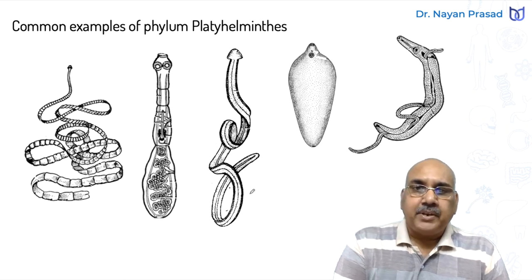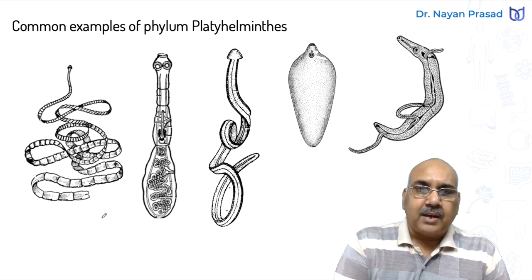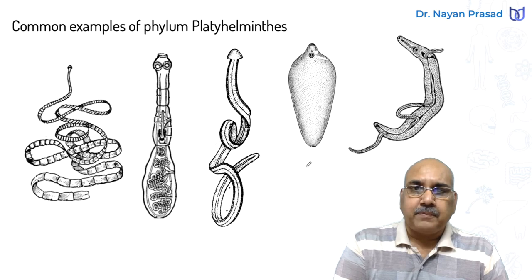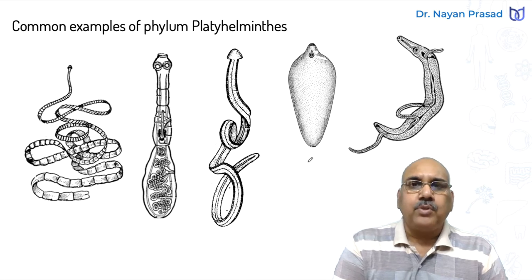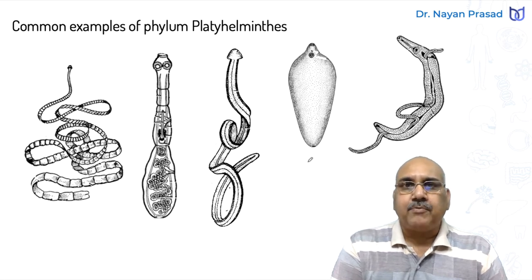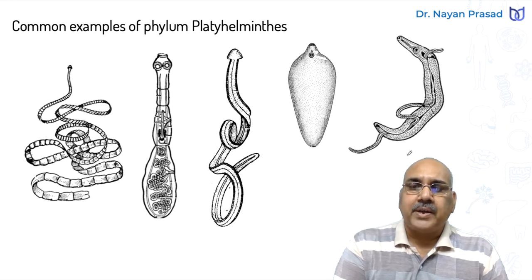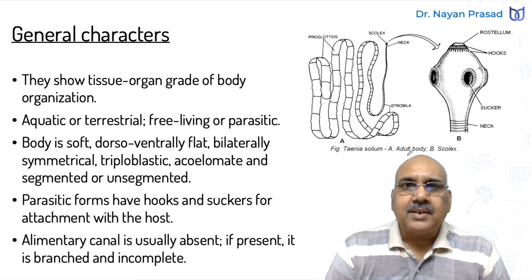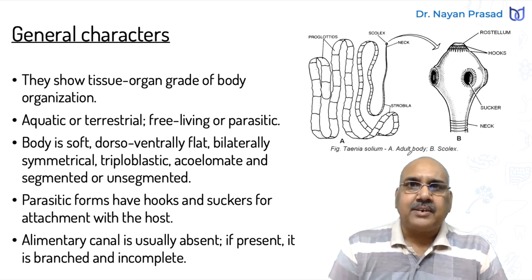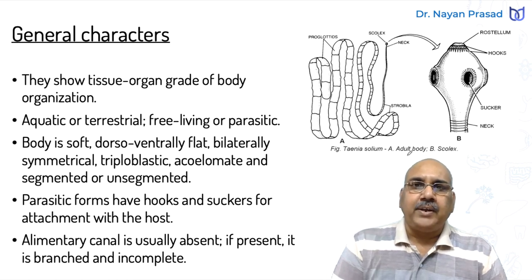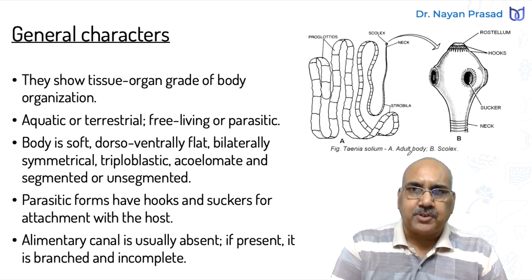Most of the individuals are bisexual, hermaphrodite, having both male and female reproductive organs in the same body. However, Schistosoma is the exception. Now let us discuss the general characters of Phylum Platyhelminthes.